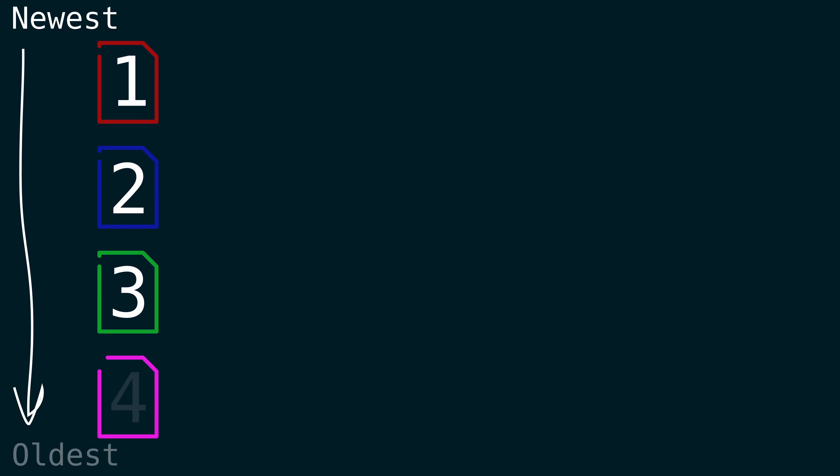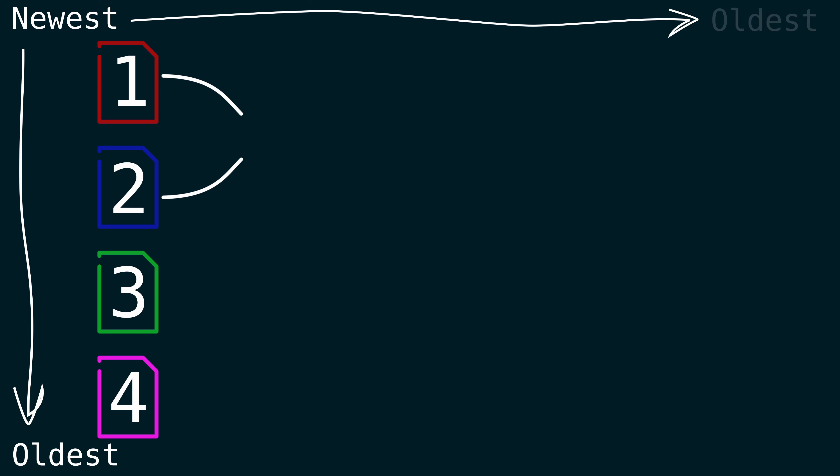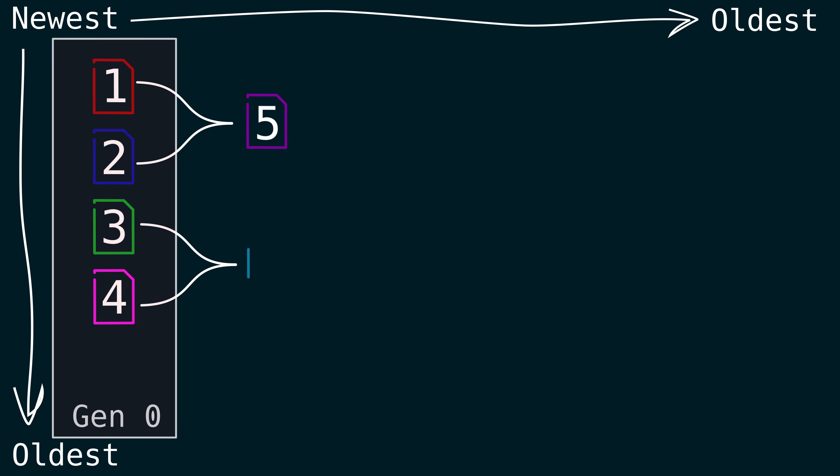Let's say we have five segment files ordered newest to oldest. We can say that any key found in a newer file is correct, meaning that we can forget the older key. So let's take the oldest two files and merge them together — every repeated key will keep the newest file's value. Those two files are done; let's move on to the next two and do the same thing.